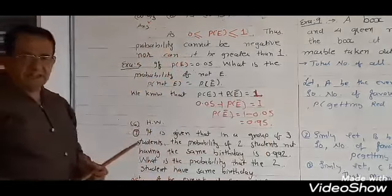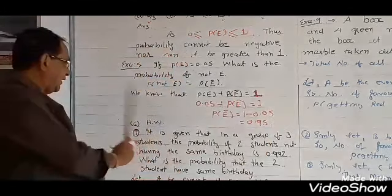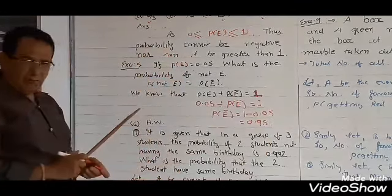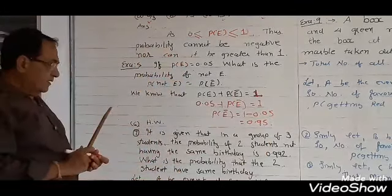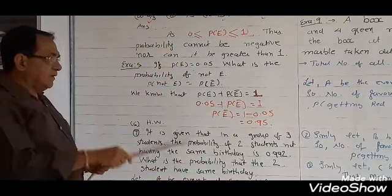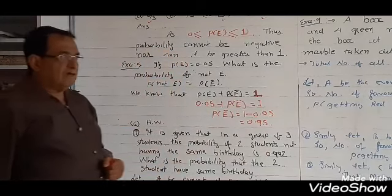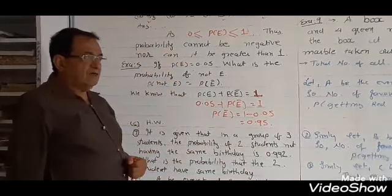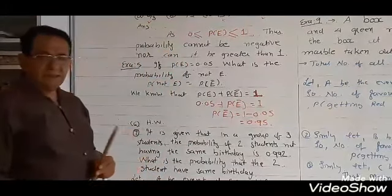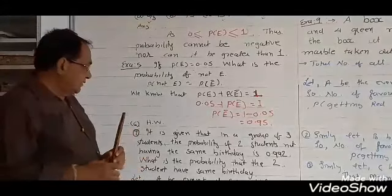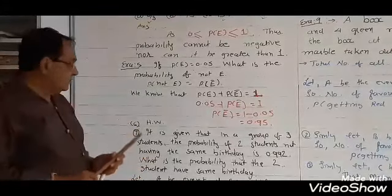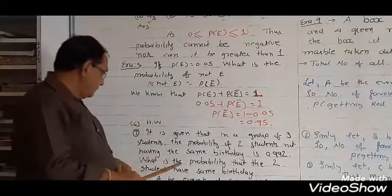Example number 6 — try the answer yourself. One has probability 0 and another has probability 1; one is impossible and another is a certain event. Try the answer.